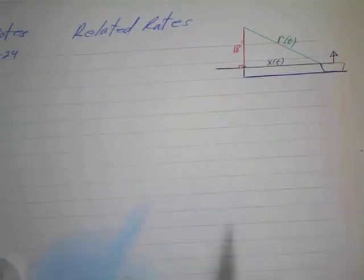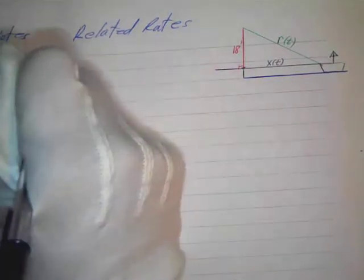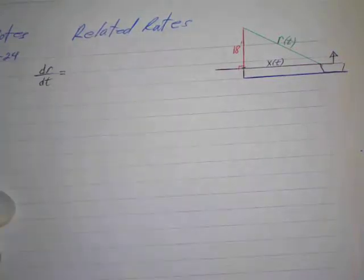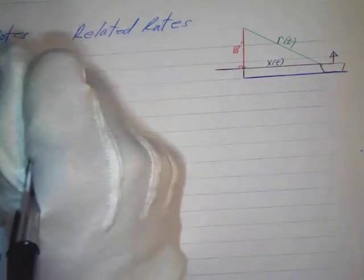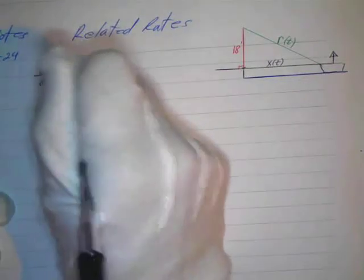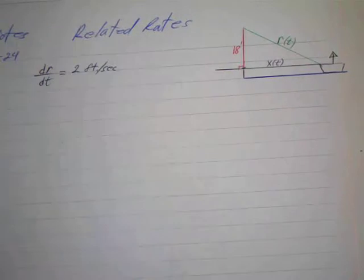So they tell us that we've got 18 feet for the height of the winch. The rope is being hauled in, so that would be the change of the rope, so dr/dt. So dr/dt is going to be 2 feet per second. So that's dr/dt.